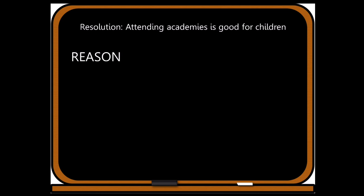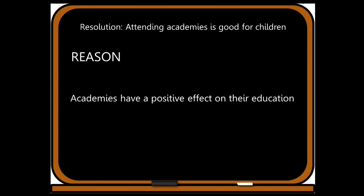Let's go back to the drawing board with the resolution: attending academies is good for children. Our assertion was that children enjoy learning in academies. Now we need to make a reason — we need to answer the why. Why do children enjoy learning at academies? So we have a reason: academies have a positive effect on their education. This reasoning supports the assertion and explains why children enjoy going to academies.